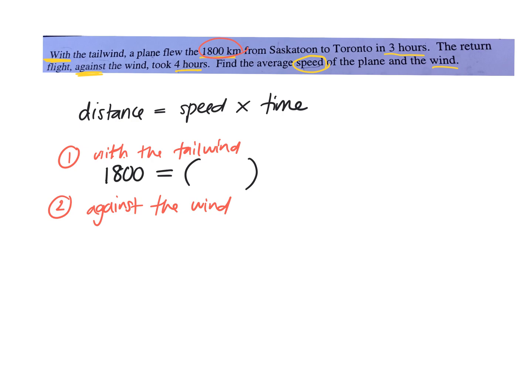Now, in the first part of the trip, if it's with the wind, is it going to go faster or slower? Right. So it would be the speed plus the wind. And how long did it take them for the first part of the trip? Three hours. Times three, so that was faster.